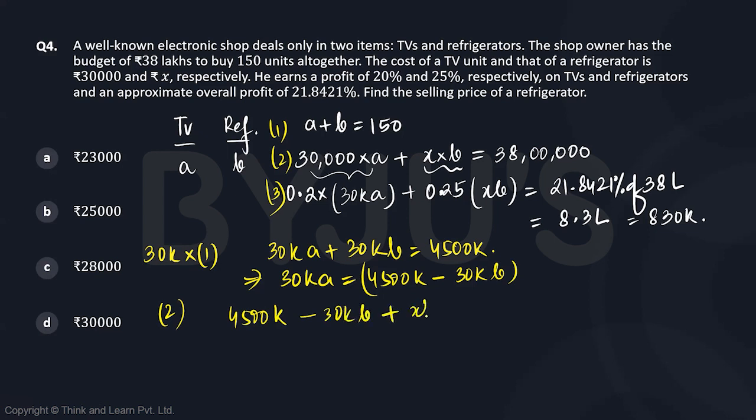Substituting into the second equation: 4,500,000 minus 30,000B plus XB equals 3,800,000. Solving this, we get 700,000 equals B times (30,000 minus X).